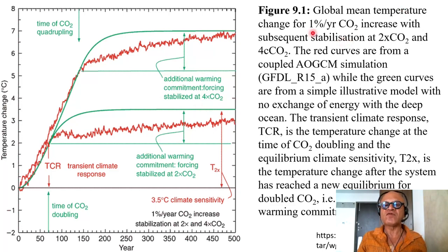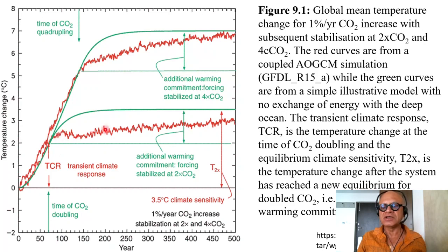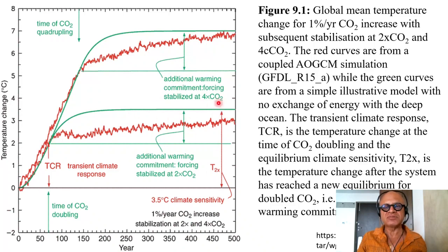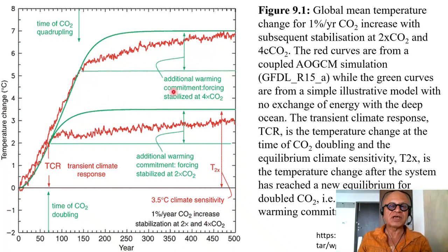Global mean temperature change for 1% per year CO2 increase with subsequent stabilization at 2xCO2 or 4xCO2. Red curves are from a coupled atmosphere-ocean general circulation model from the Geophysical Fluid Dynamics Lab in Princeton, while the green curves are from a simple illustrative model with no exchange of energy with a deep ocean. Transient climate response, TCR, is the temperature change at the time of CO2 doubling, and the equilibrium climate sensitivity T2x is the temperature change after the system has reached equilibrium. T4x is accomplished after equilibrating at quadrupling the CO2.